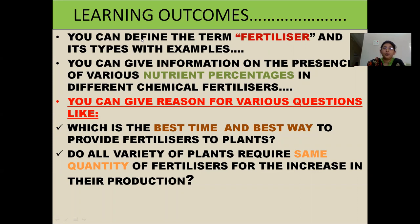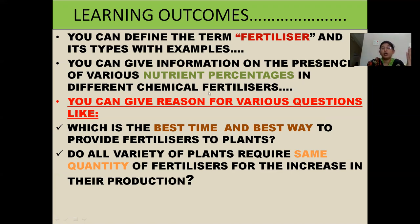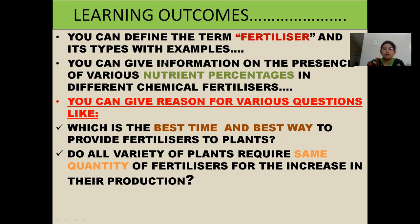After my class, you can define the term fertilizer and its types with examples — what is a fertilizer, how many types, and cite examples. You can give information on the presence of various nutrient percentages in different chemical fertilizers. You can also give reasons for various questions: which is the best time and best way to provide fertilizers to plants, and do all varieties of plants require the same quantity of fertilizers?